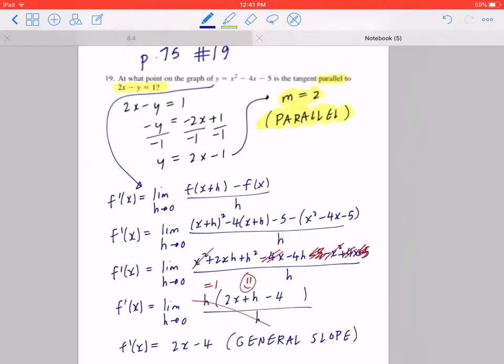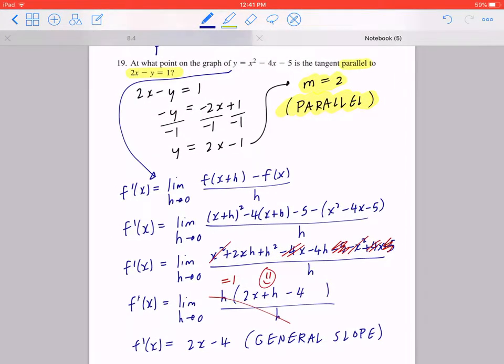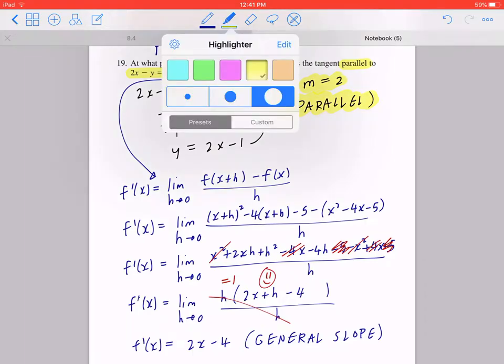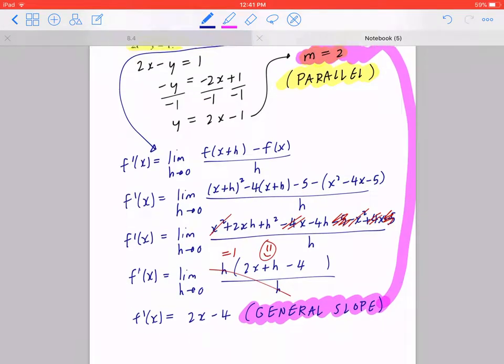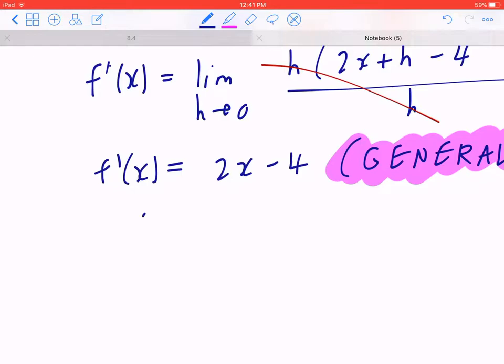Now, the question says at what point, so you want to find x, y. And the goal is to look at the general slope and you look at the specific slope and you make them equal and you solve for x. So this means 2 equals 2x minus 4.